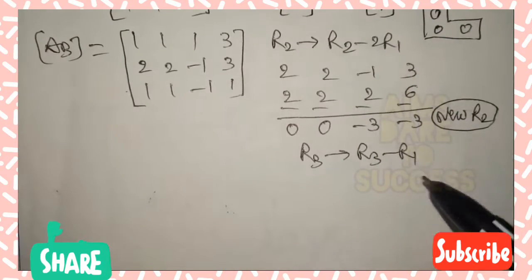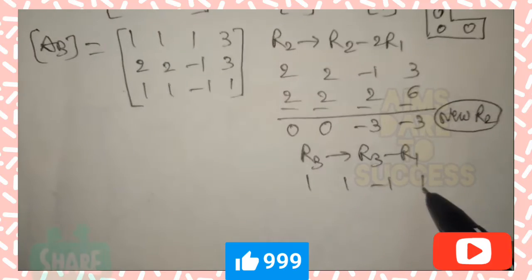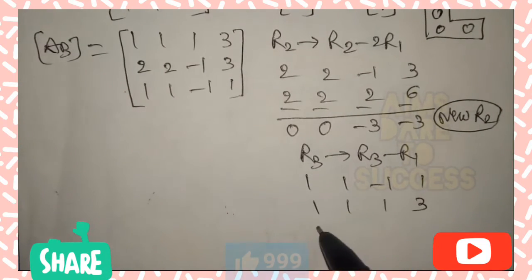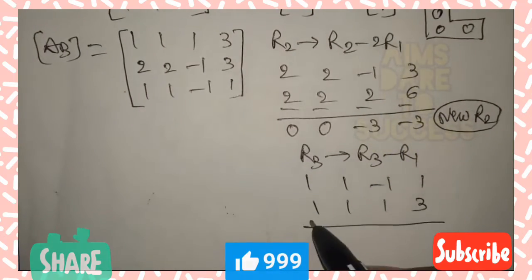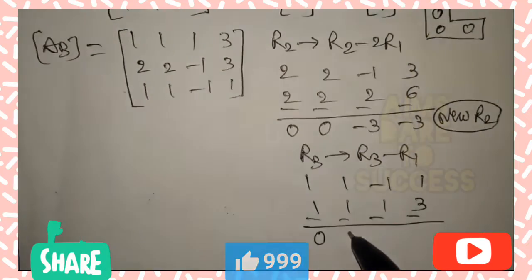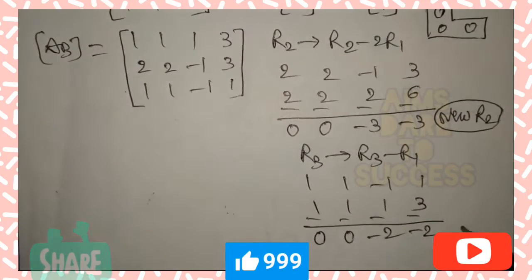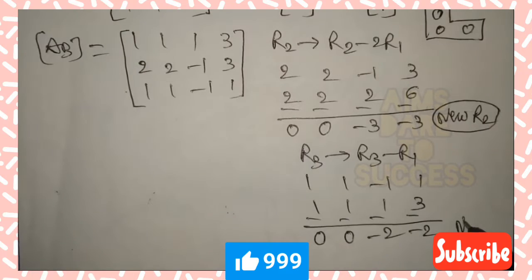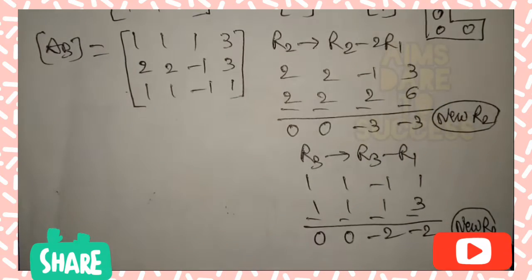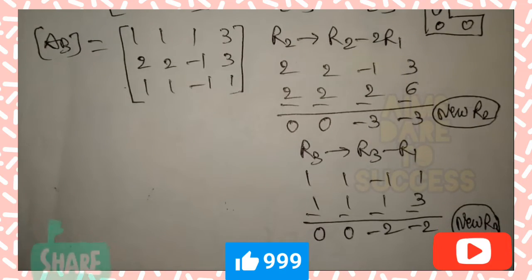Similarly, change R3 using R1. Apply R3 → R3 - R1: 1 - 1 = 0, 1 - 1 = 0, -1 - 1 = -2, and 1 - 3 = -2. So new R3 is 0, 0, -2, -2.